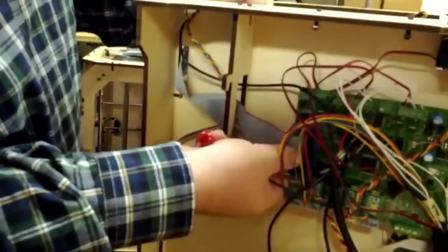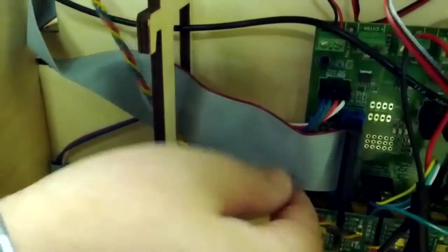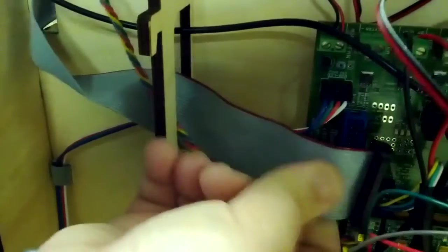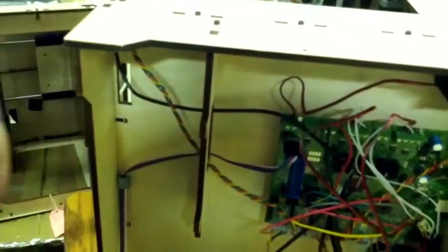Now, you see the ribbon cable is actually attached to the mighty board right here. And then you're going to remove that, and then you can slide the ribbon cable out from the top here pretty easily and out through that.